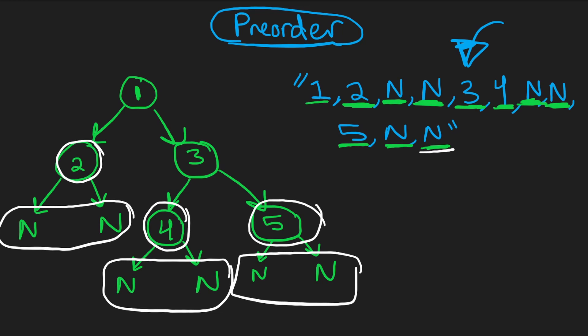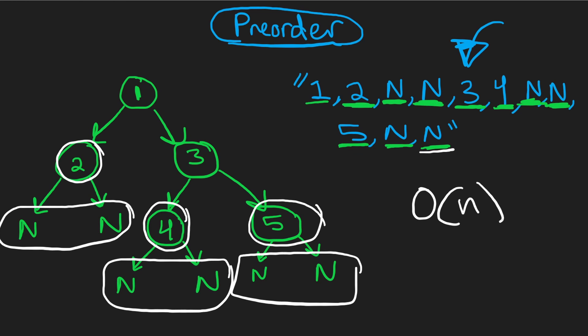What's the time complexity? Pre-order traversal is linear, so it's O(n) for serializing, and similarly O(n) for deserializing. This problem is actually simpler than you might think for a hard problem. Let's jump into the code.